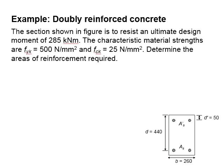Let us try an example to design for a doubly reinforced concrete. The section given here is used to resist an ultimate design load of 285 kNm. The steel strength is fyk = 500 N/mm² and the concrete strength is fck = 25 N/mm². The question asks to determine the area of reinforcement required within the section.